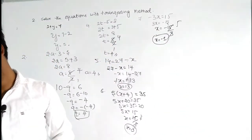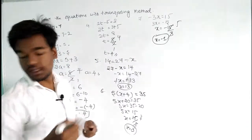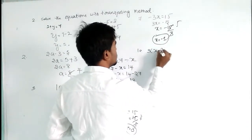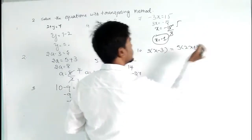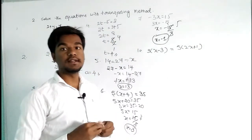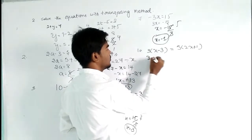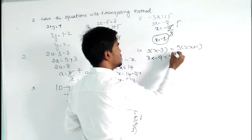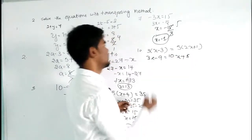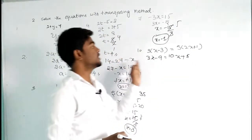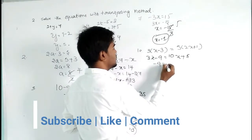Now solving the tenth question: 3(x - 3) = 5(2x + 1). Applying distribution over subtraction and addition: 3x - 9 = 10x + 5. It is better to transpose 3x to the right side, giving -9 = 10x + 5 - 3x.